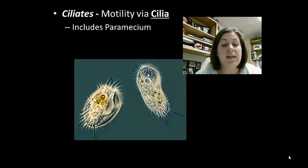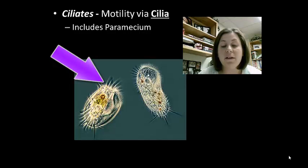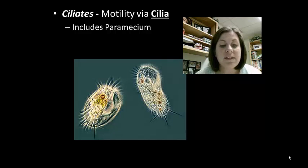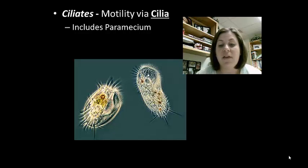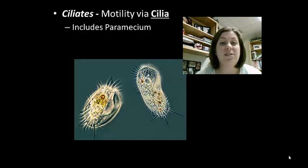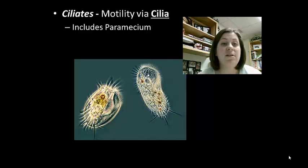The next group are the ciliates, and they move via cilia — those small hair-like extensions. This group includes the parameciums. Many are free-living in aquatic environments and also have contractile vacuoles like amoebas. They take food in through an area called the gullet and produce food vacuoles where they digest it. They also have an anal pore to secrete waste. This group possesses two nuclei: a macronucleus that helps regulate cell activity, and a micronucleus that is important during the reproductive stages.